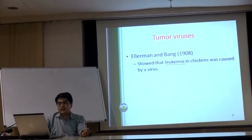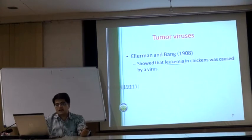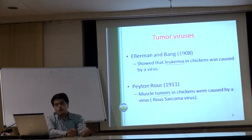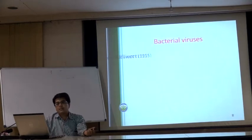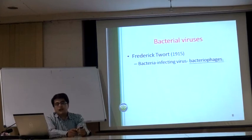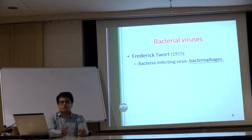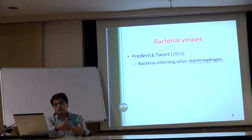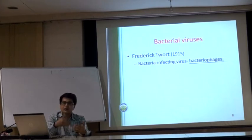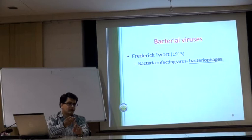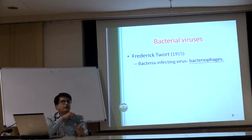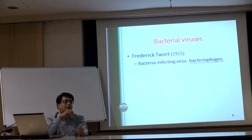Ellermann and Bang, in 1908, showed that leukemia in chickens was caused by a virus. Later, Peyton Rous identified that a muscle tumor in chickens was caused by a virus — what we call Rous sarcoma virus. Frederick Twort then made a remarkable observation of bacteria-infecting viruses. Before him, people knew about filterable agents infecting plant or animal cells. But Twort's observation suggested that bacteria-infecting viruses exist — what they called bacteriophage, or simply phages.